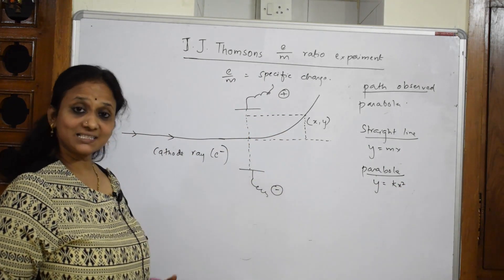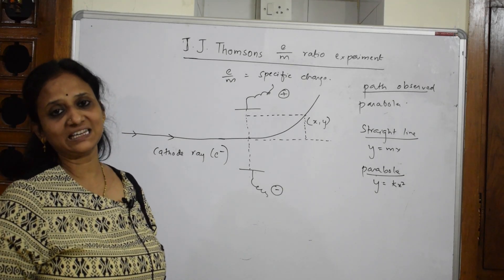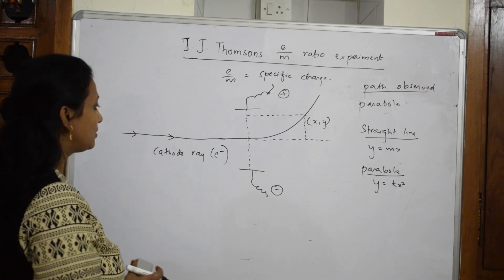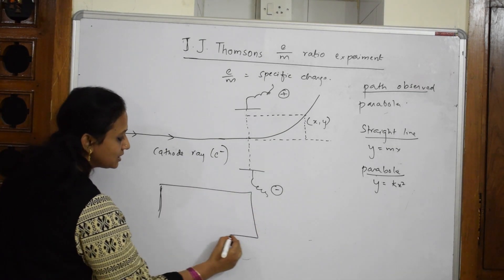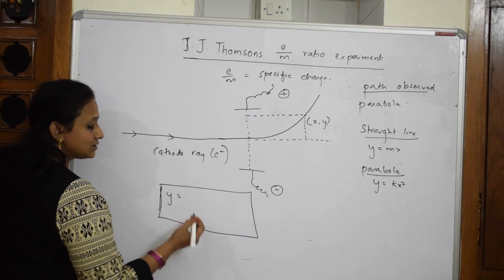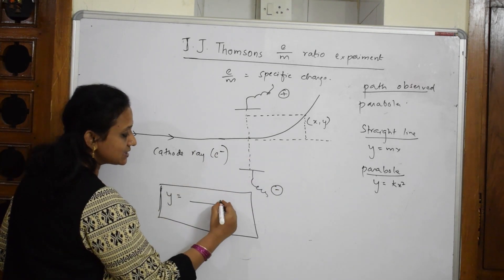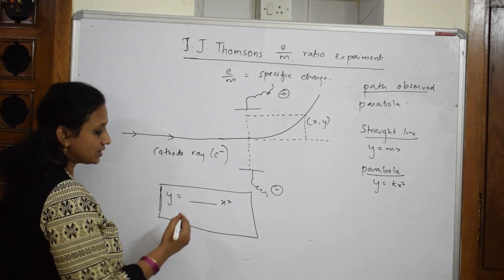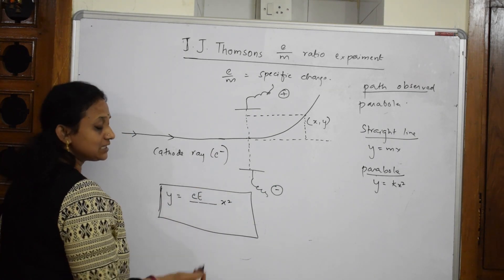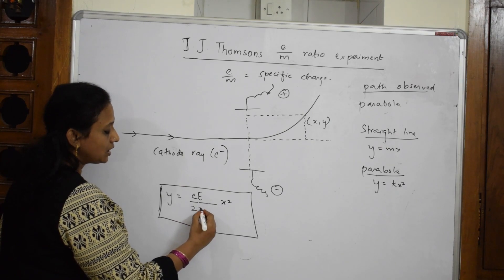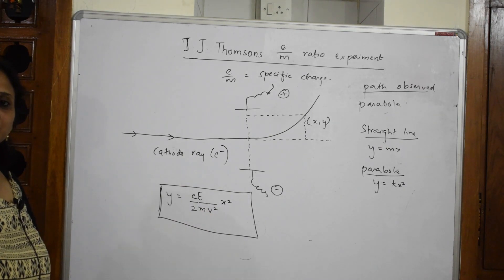Using this data, J.J. Thomson derived the formula for finding y. He observed and gave us the formula: y = (e·E / 2mv²) · x². That k value is small e into capital E divided by 2mv². This is the formula which is given.